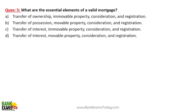What are the essential elements of a valid mortgage? First, there is a transfer of interest — not transfer of ownership. The bank does not get ownership or possession; it only gets interest. In case you default, the bank takes over the property and recovers the loan. It is for immovable property — the key factors are transfer of interest, immovable property, consideration, and registration.